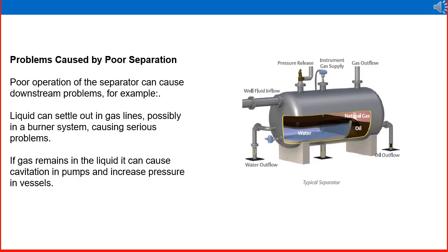Poor operation of the separator can cause downstream problems. For example, liquid carried over with the gas into the gas line can cause serious problems in a burner system. If gas is carried over with the liquid, it can go to downstream low-pressure vessels or pumps, causing cavitation in the pump or increasing pressure in vessels. These are all dangerous and serious problems.